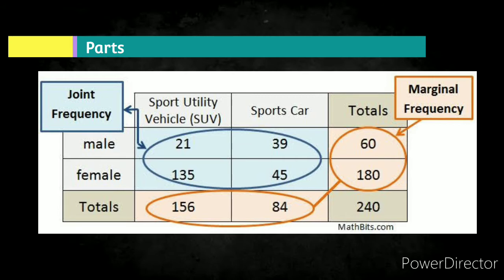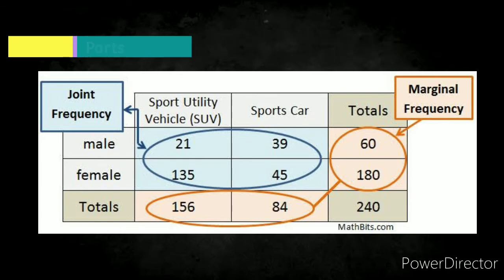And we have here the marginal frequency. It describes the totals of rows and columns. We have 21 plus 39 equals 60, 135 plus 45 equals 180, 21 plus 135 equals 156, 39 plus 45 equals 84. So, the grand total or the general total of rows and columns is 240. It is described as N or the number of samples.